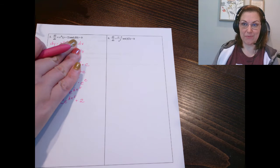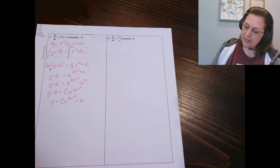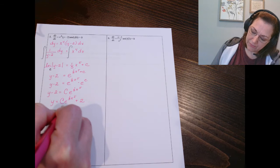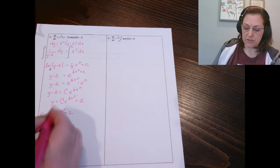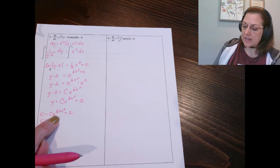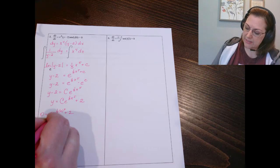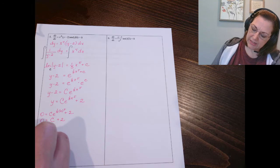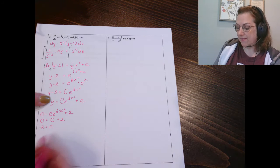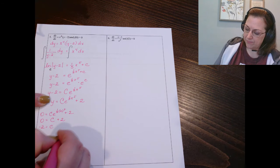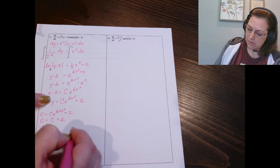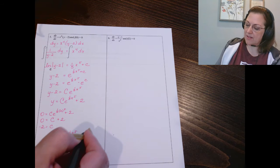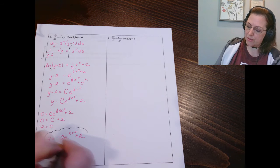Now we're going to use our initial point: when x is 0, y is 0. So we're going to put in 0 for y and 0 for x. That's going to give me 0 equals e to the 0 is 1, so I get 1 times c, meaning c equals negative 2. So I'm going to put that value back into the equation, and there's my particular solution.